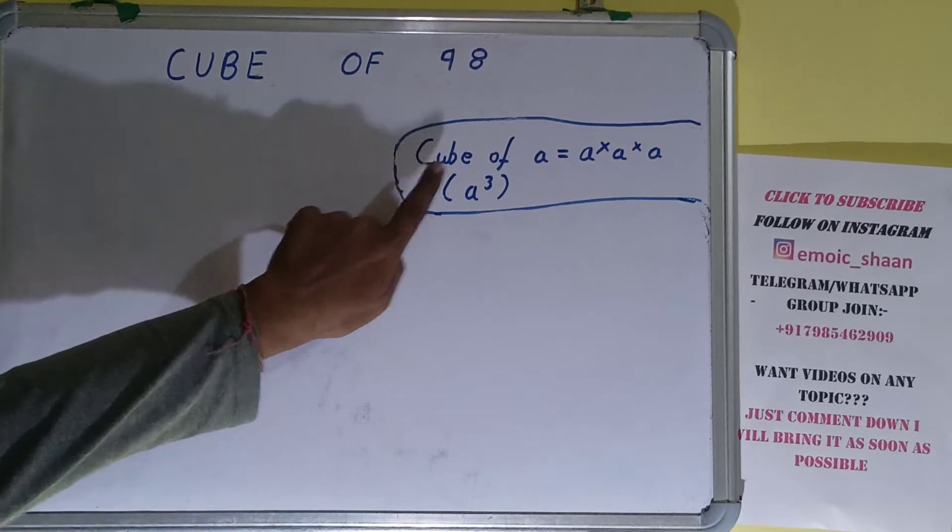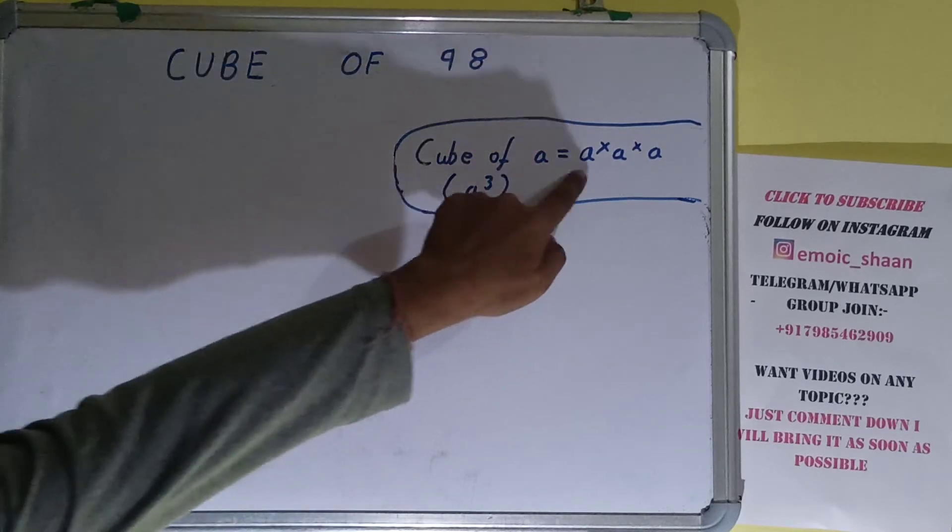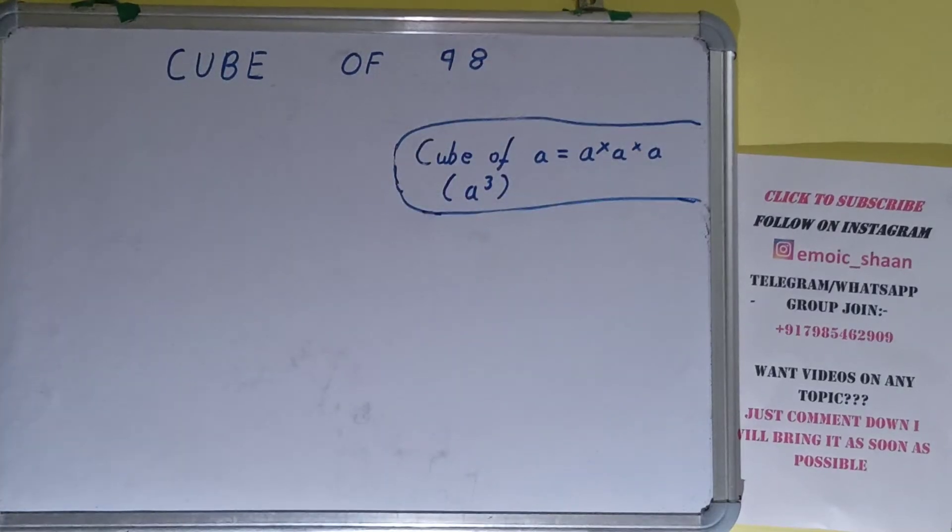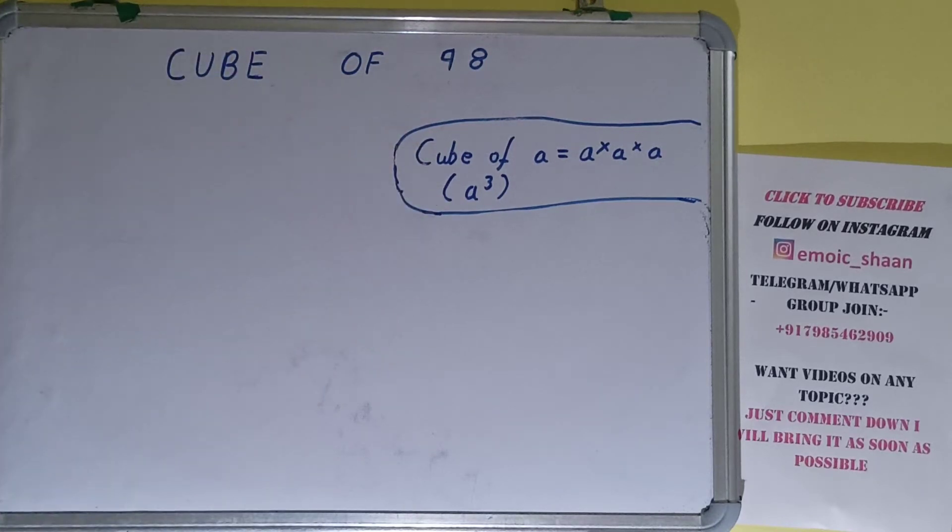Let's say we have to find cube of a, where a is any integer. Then we need to do a into a into a - that is how we can get cube of a. One more thing: cube of a can also be written as a³.